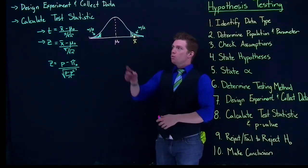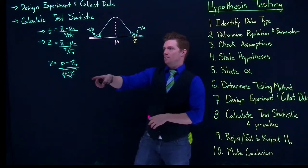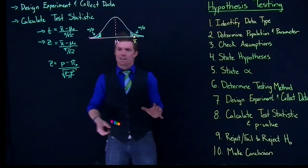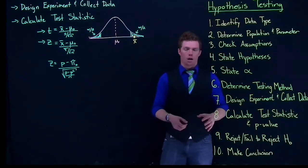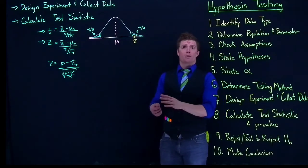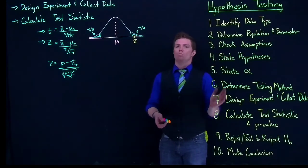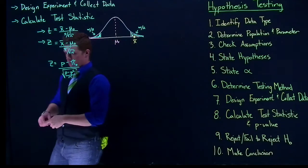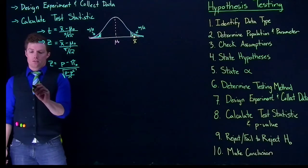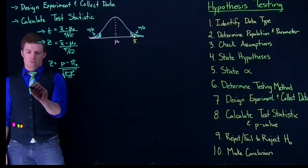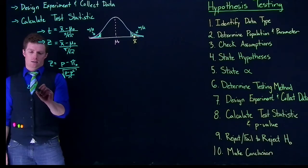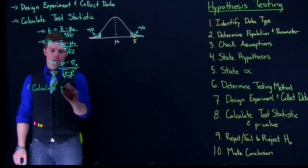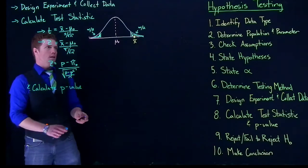When we calculate our test statistic, for our z's and t's it's going to let us know how many standard deviations away from the mean we are. The reporting format we're going to use is APA — we'll cover that in another video. And then we also need to calculate the p-value, which is a new thing we need to figure out.